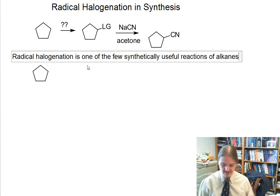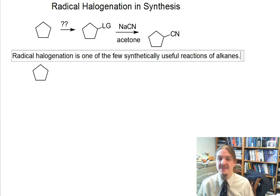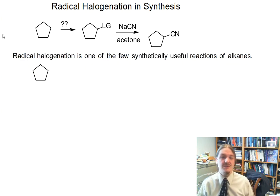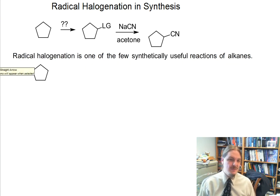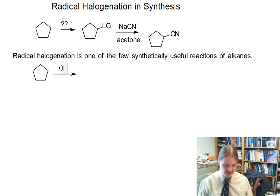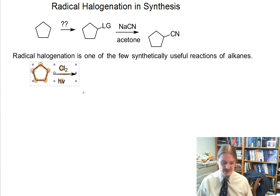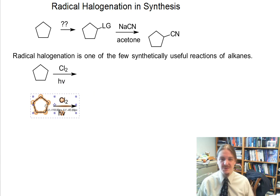Remember alkanes have no other functional groups, and you kind of need those other functional groups for things to happen. Since this video is part of a series on radical halogenation, we've actually talked about in previous videos radical chlorination and radical bromination and why we don't use fluorine and iodine.